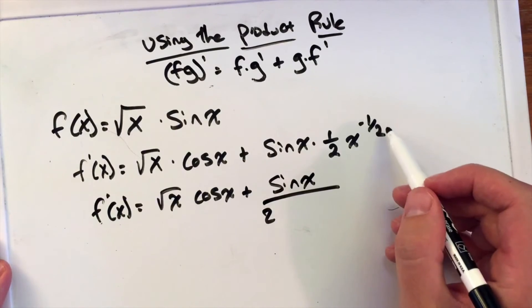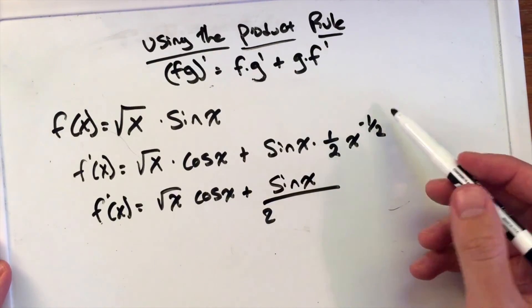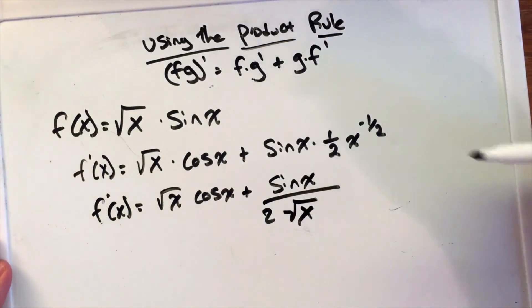The x^(-1/2) - the negative exponent brings it to the denominator, and the 1/2 power is the square root, so we have √x in the denominator. Final result: f'(x) = √x · cos(x) + sin(x)/(2√x).